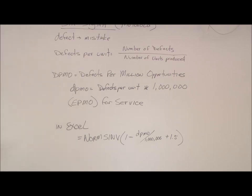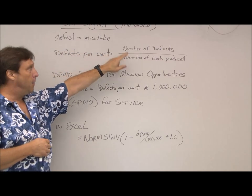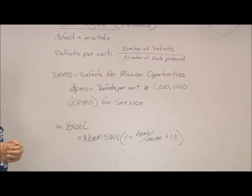A defect is any mistake. If you're talking about a service, it could be filling out pages of paper incorrectly. If you're talking about a product, it could be a defect in the product. So the first thing you would measure is the defects per unit, which is simply how many defects you had and how many units you produced.